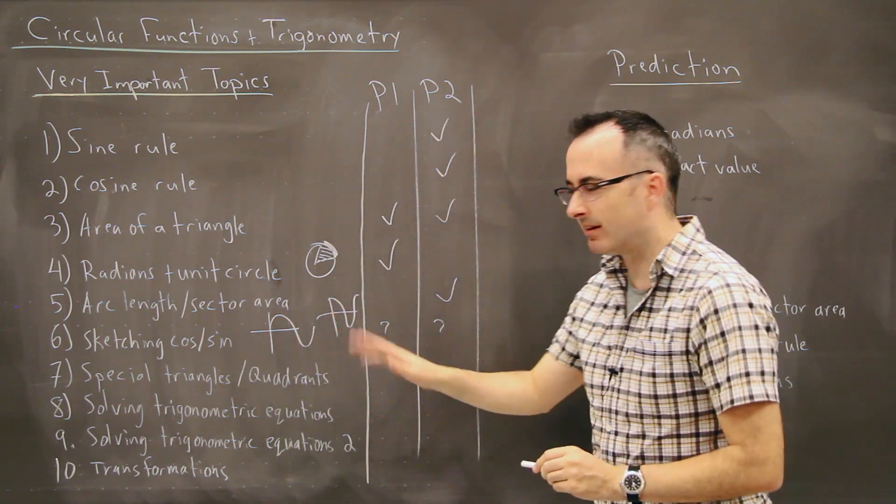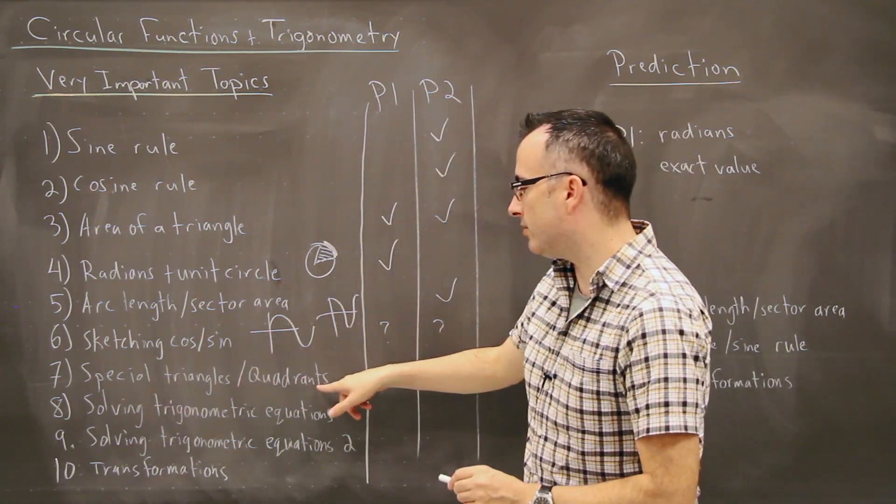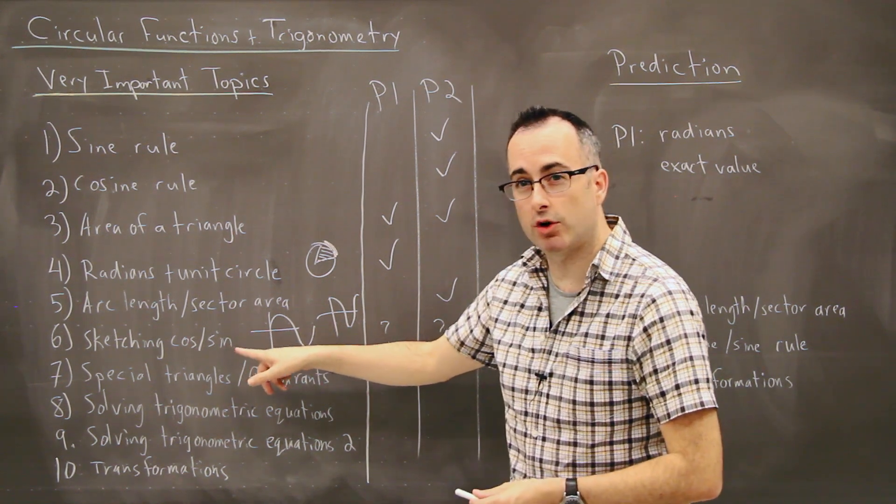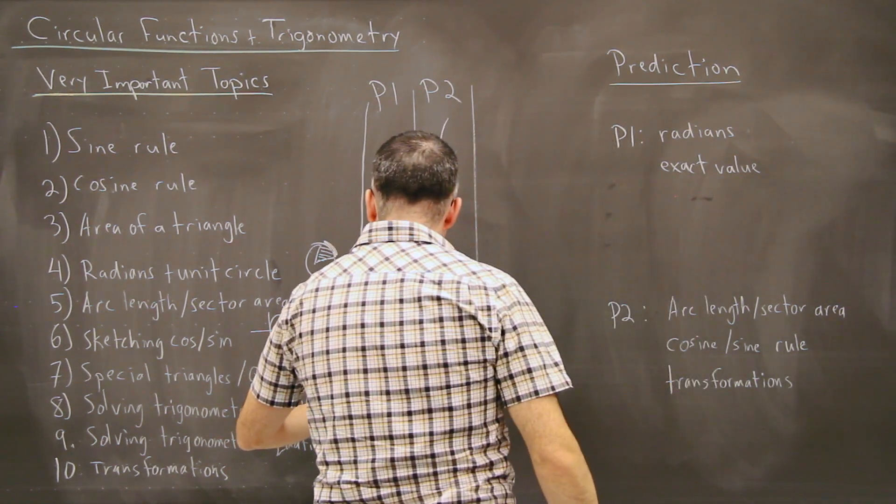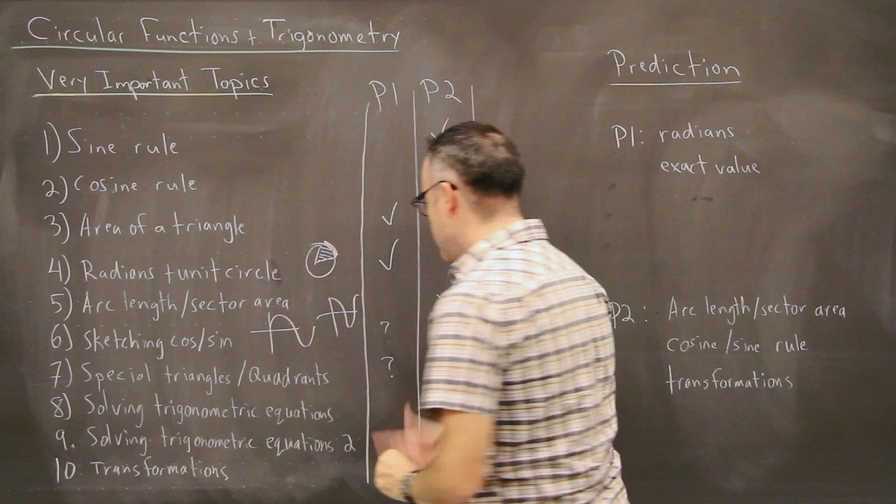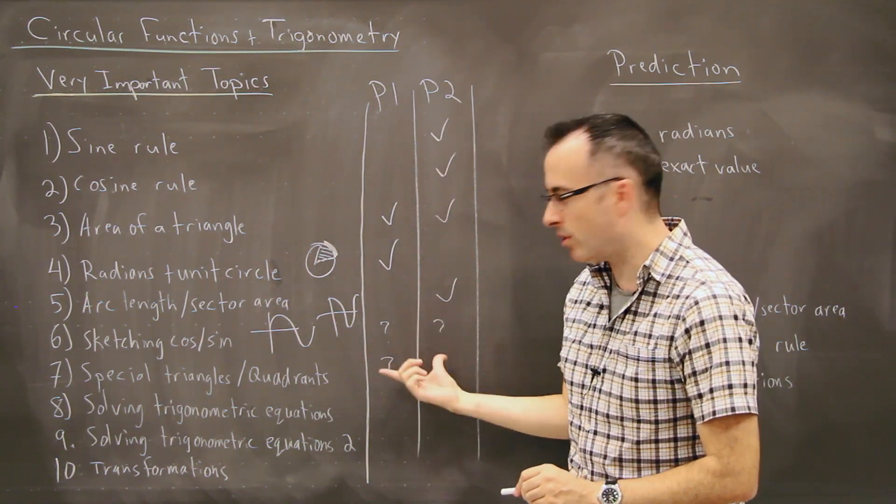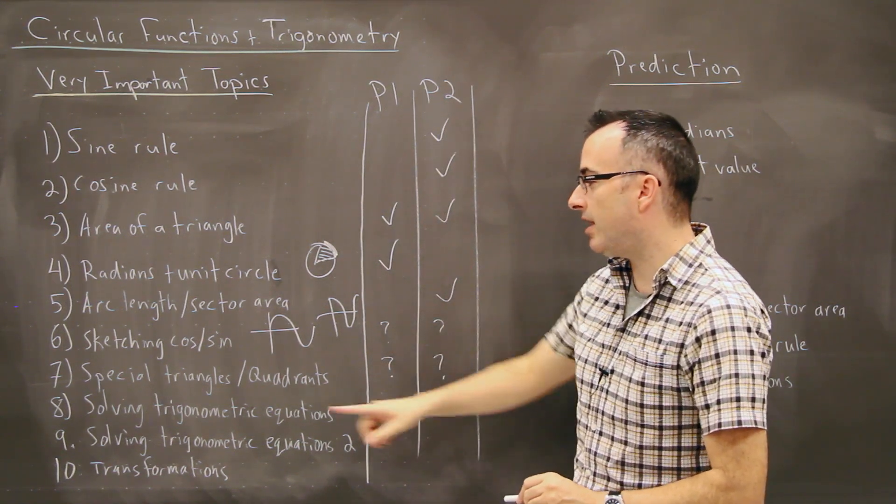We also have something called special triangles and quadrants. This is a trick that I'm going to show you in order to help you to do something really important. So they don't really show up exactly on paper one or two.